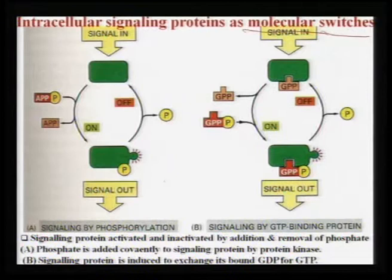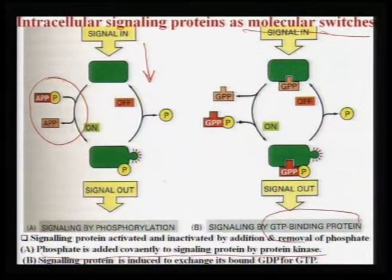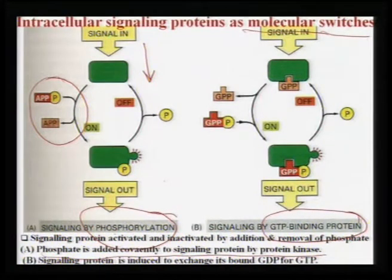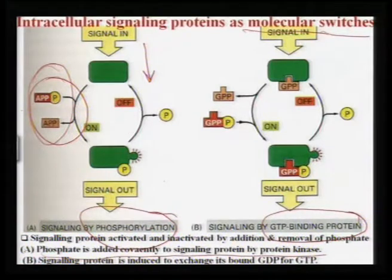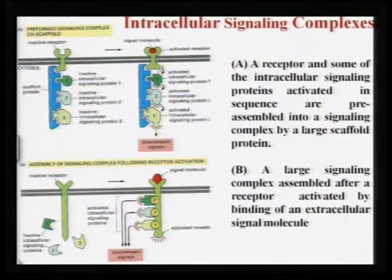Once the signal comes in, there is a particular process that activates — like phosphate is added covalently to a signal protein, to a protein kinase — and the signaling protein is induced to exchange GDP to GTP. Signaling by GTP binding protein and signaling by phosphorylation. Unless it receives the signal, this ATP to ADP reaction cannot take place. This is 'on,' and once it is 'off,' that means it goes back to its original position, when the signal will leave the cell.